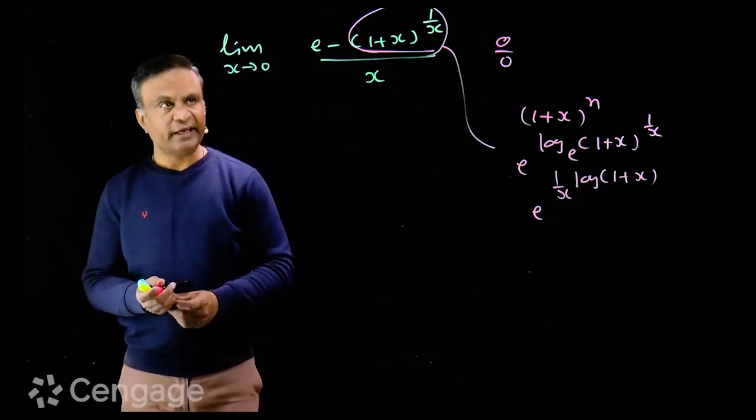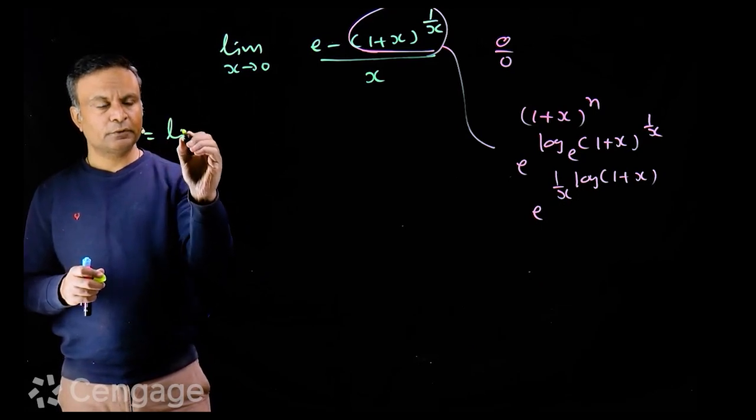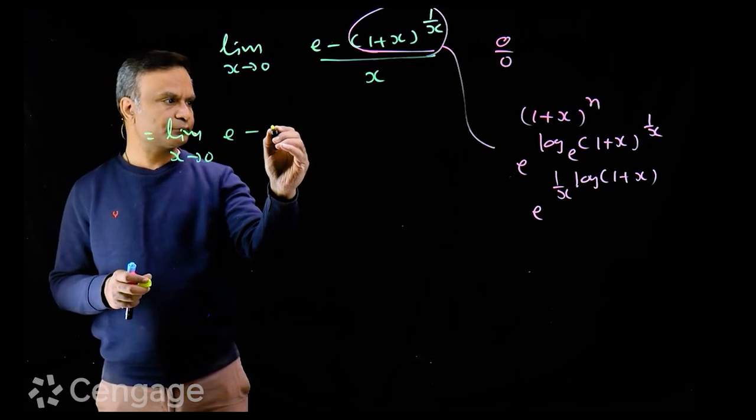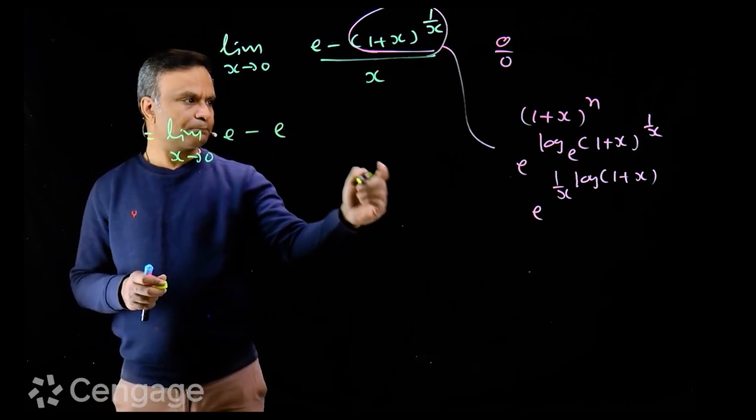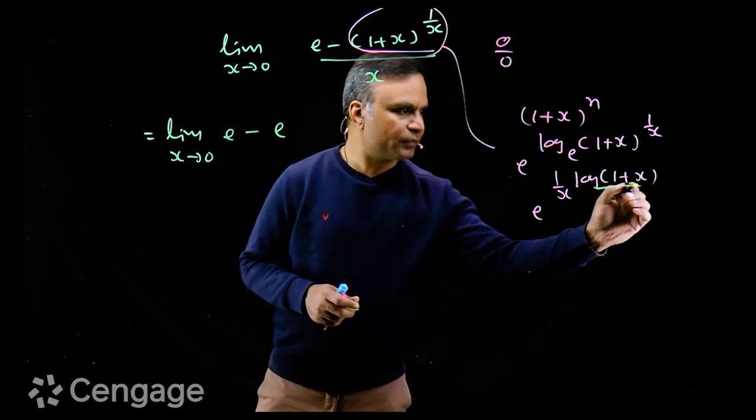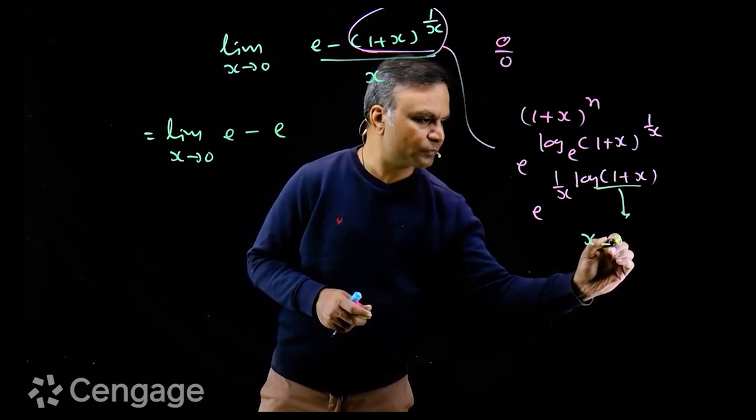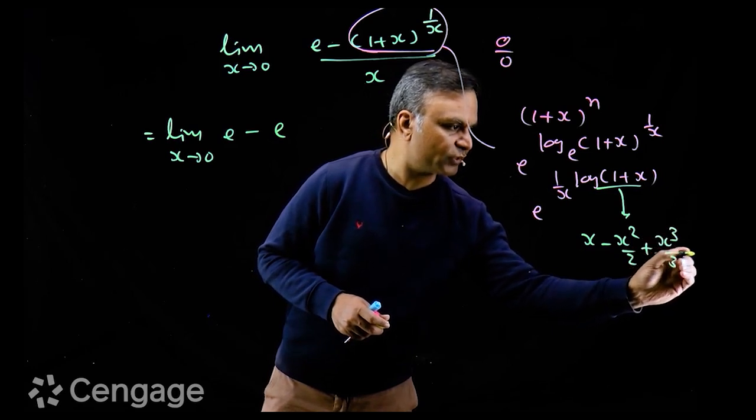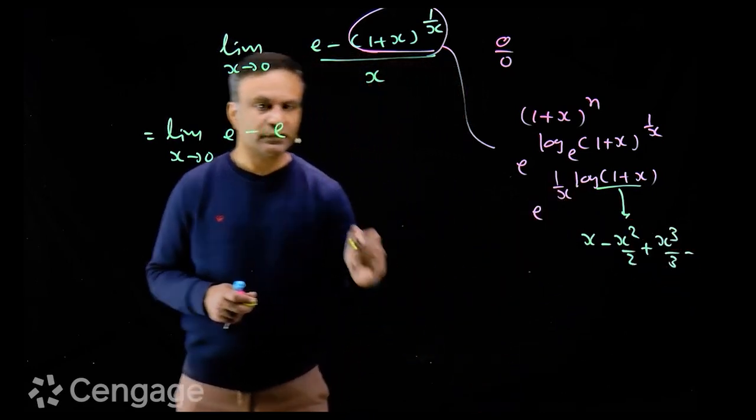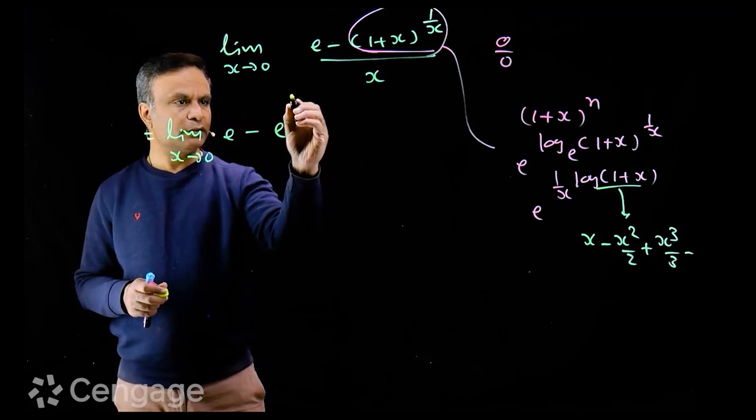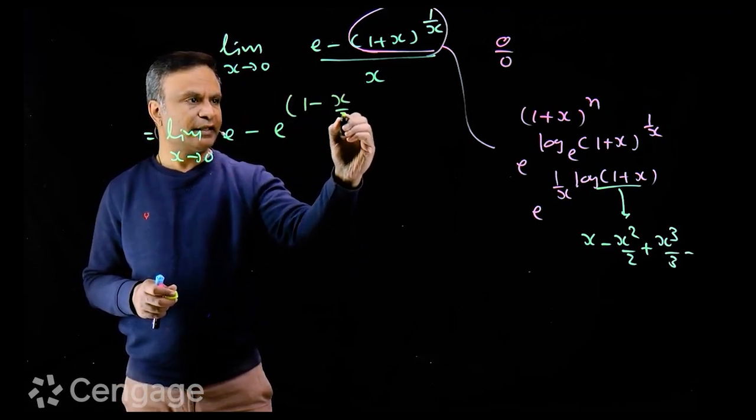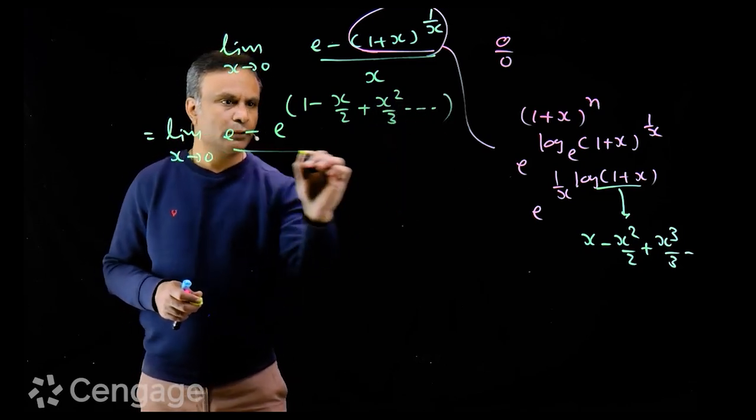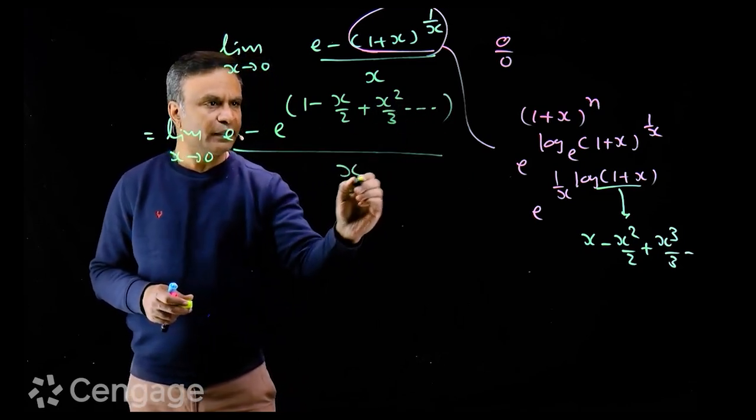So, using that, we get limit x tends to 0 of e minus e power expansion of log 1 plus x is x minus x square over 2 plus x cube over 3 and so on. This divided by x. So we have here e power 1 minus x upon 2 plus x square upon 3 onwards. This divided by x.